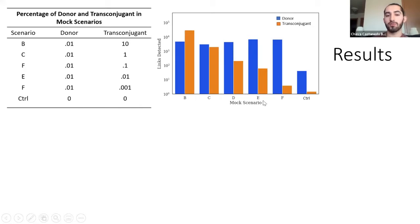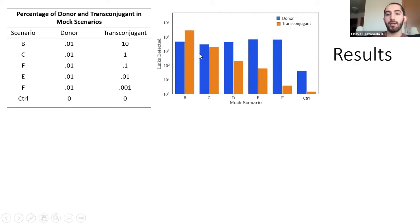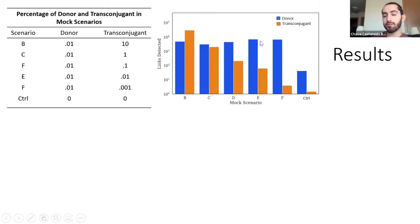Here are the results of the experiment. After creating the mock scenarios, we applied the HI-C method and performed paired-end sequencing to find the links identifying the presence of the donor or transconjugant. The x-axis shows mock scenarios B through F and the control; the y-axis shows the number of links detected. The donor is shown in blue, the transconjugant in orange. The typical trend is similar to the amount of bacteria added — the donor stays relatively consistent, and we observe a 10-fold decrease in the transconjugant.